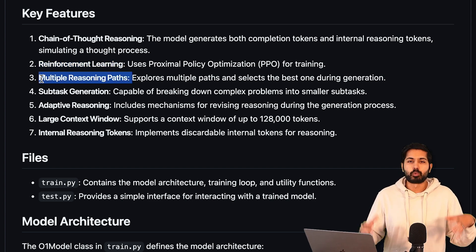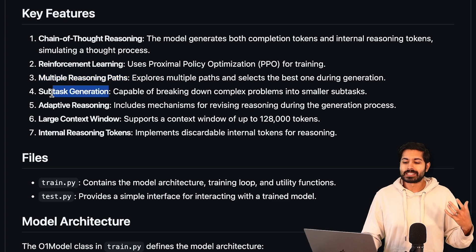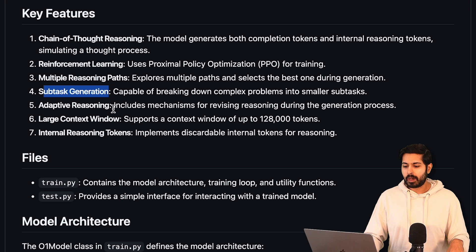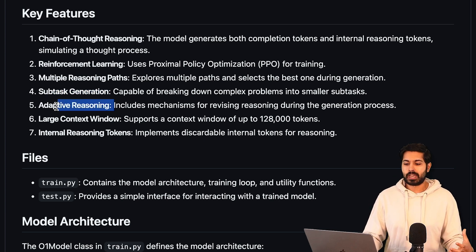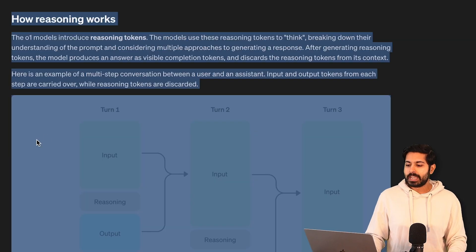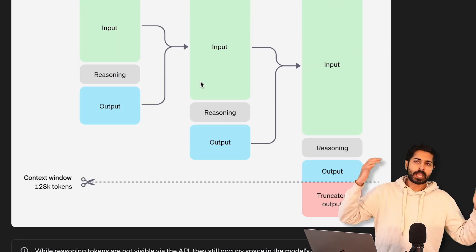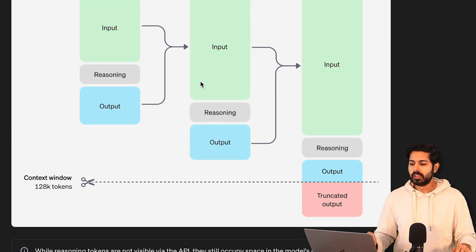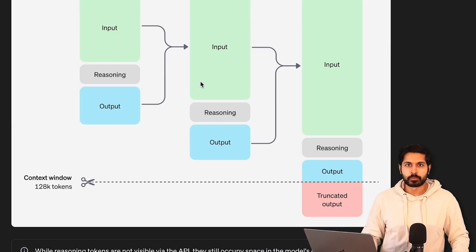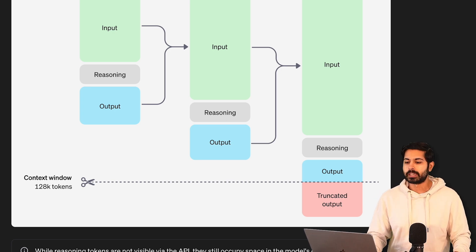How is it using reinforcement learning during the training process as well as the inference process? What type of reasoning paths is it taking? What are the subtasks that it's generating during inference time? Is it adapting in real time? It is. And what are these reasoning tokens that OpenAI was talking about in their documentation? They said developers have to deal with these reasoning tokens — we're going to figure out what these reasoning tokens really look like.